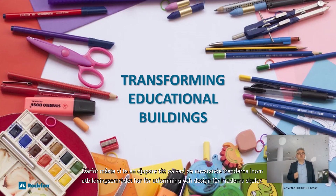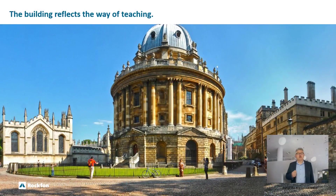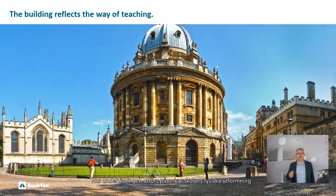Therefore, we need to take a deeper look at what the current trends in the educational domain mean for the construction and design of modern schools. School buildings and school designs will become more and more a reflection of the way education takes place in the building. The way of teaching affects the physical design of the school, and once the academic offering changes, buildings will need to be able to respond to that.